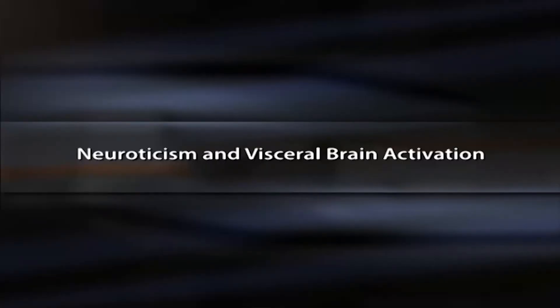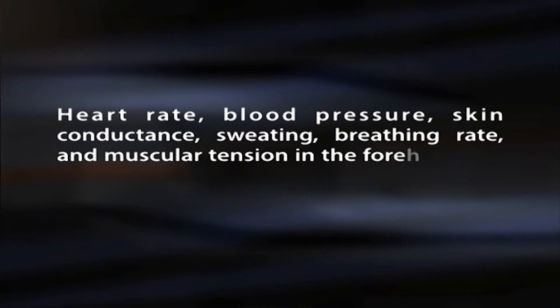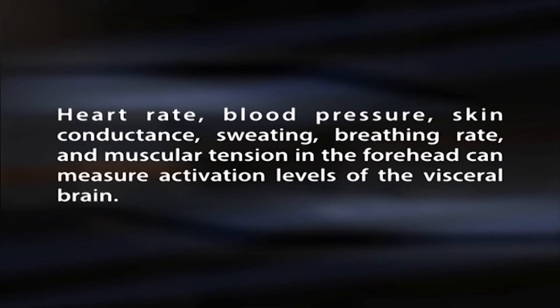Eysenck also explained neuroticism in terms of activation thresholds in the sympathetic nervous system or visceral brain, also referred to as the limbic system, which regulates emotional states such as sex, fear, and aggression, and is responsible for the fight-or-flight response in the face of danger. Heart rate, blood pressure, skin conductance, sweating, breathing rate, and muscular tension in the forehead can measure activation levels of the visceral brain. Neurotic individuals have greater activation levels and lower thresholds, making them easily upset in the face of minor stresses, whereas emotionally stable people are calm under such stresses because they have lesser activation levels and higher thresholds.